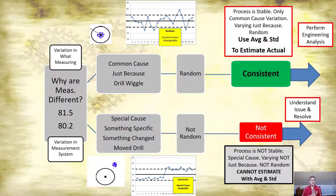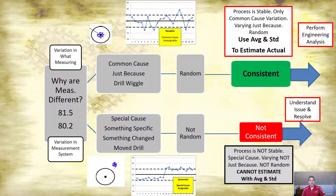We've got to understand those issues and resolve them. If we're doing an experiment, it's really important to know whether the information we collected is stable. If it's not, we can't use that data to make a good decision — our decision would be based on faulty information and may be wrong.